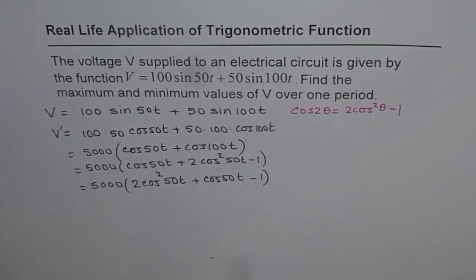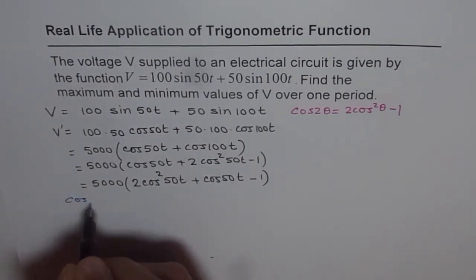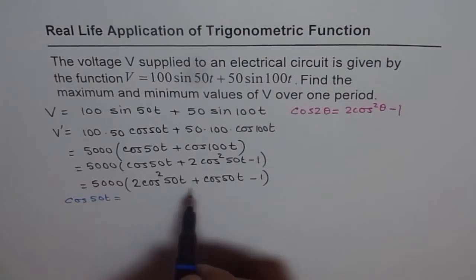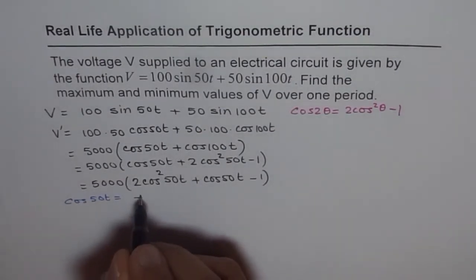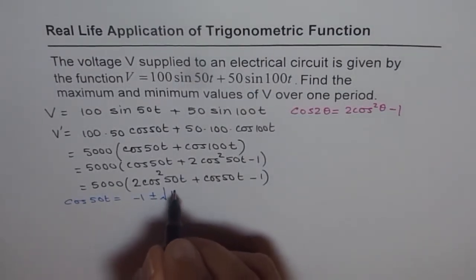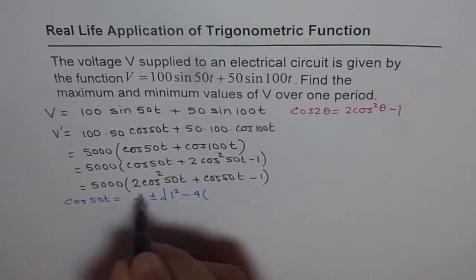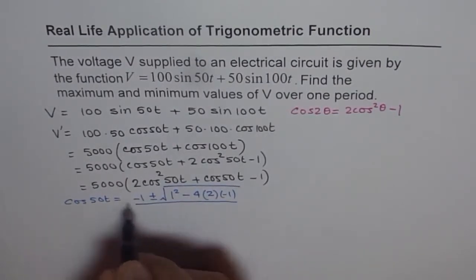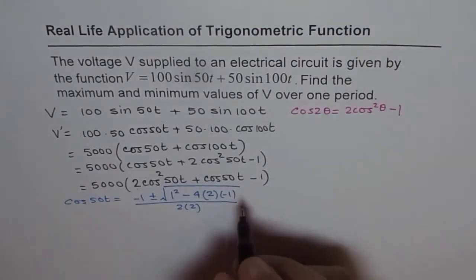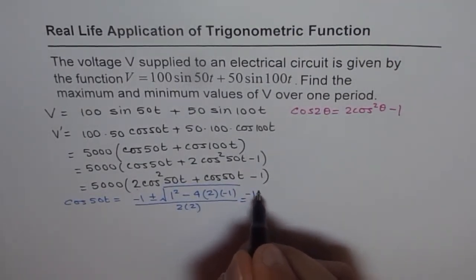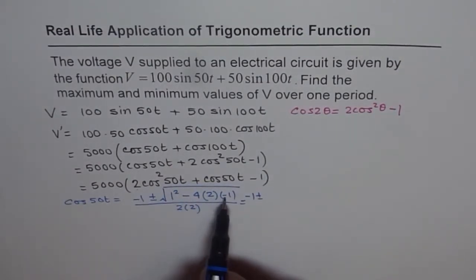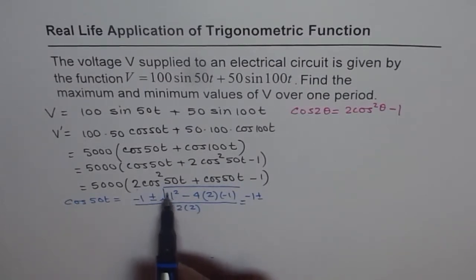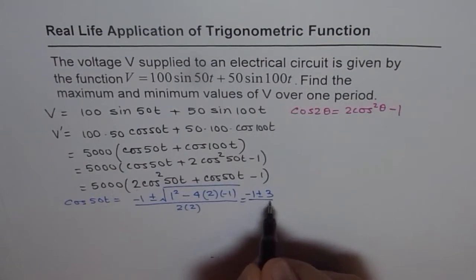We can use the quadratic formula or factor it to find the solution. Applying the quadratic formula, cos(50T) equals minus B plus or minus the square root of B² minus 4AC, all divided by 2A. Here B is 1, A is 2, and C is minus 1. So we get minus 1 plus or minus the square root of 1 plus 8, which is the square root of 9, giving us plus or minus 3, all over 4.